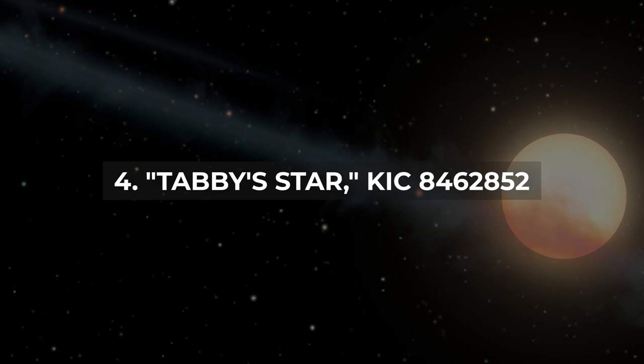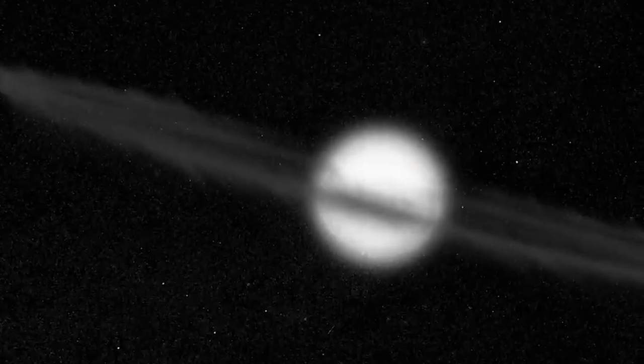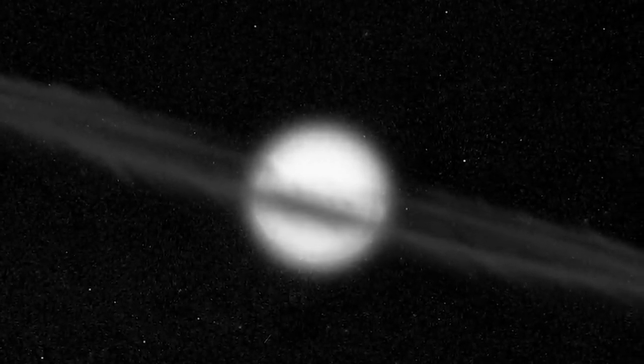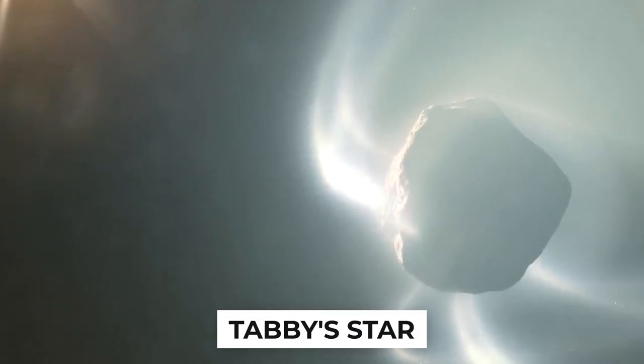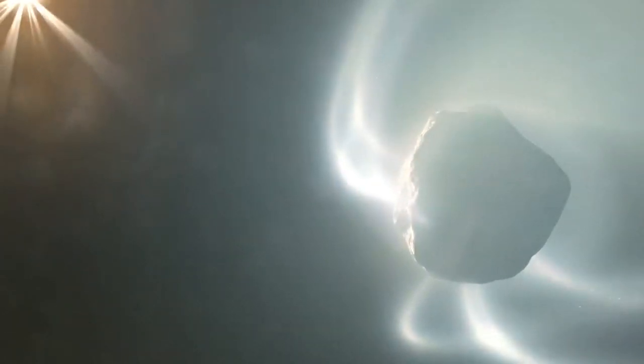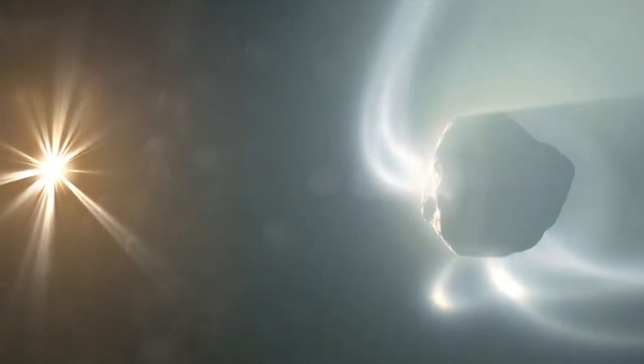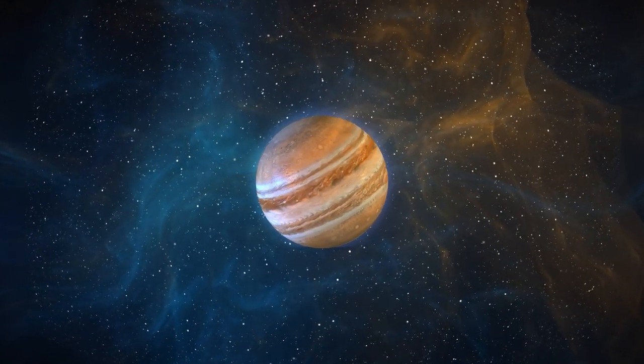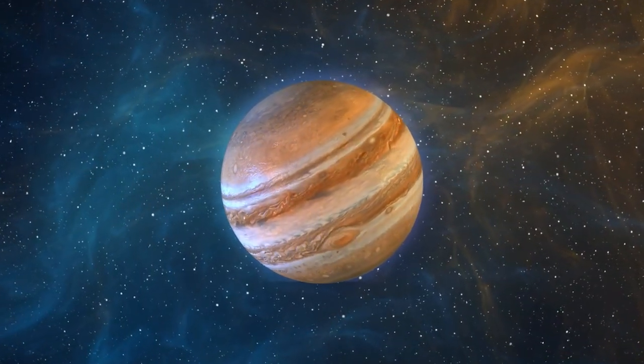Number 4: Tabby's Star – KIC 8462852. Not only does the star KIC 8462852 have a catchy, memorable name, but it's also a 1500 light-year distance unresolved mystery. KIC 8462852, sometimes referred to as Tabby's Star, is obstructed by a significant object. From our vantage point, the star's brightness is obstructed by about 20%. Furthermore, even a planet the size of Jupiter would only block 1% of a star the size of KIC 8462852, suggesting that it is not a planet.